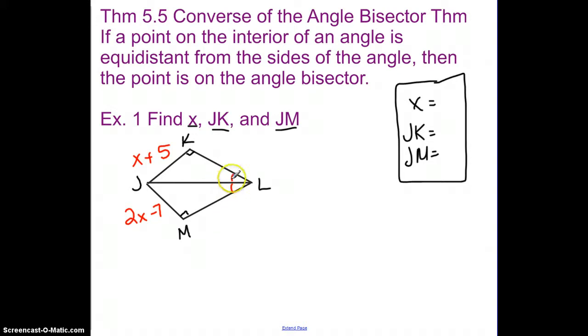So in this one, see how these two are equal angles? That means that this JL must obviously cut this angle into two equal pieces. If that's true, then that means this side right here and this side right here, the sides that are opposite those angles would also have to be equal. So in this case, that means X plus 5 is going to be equal to 2X minus 7.